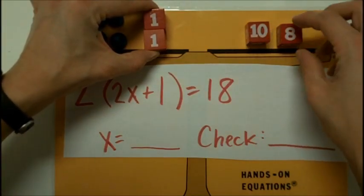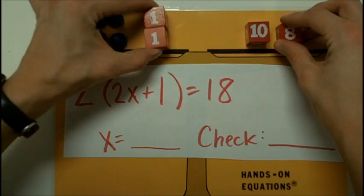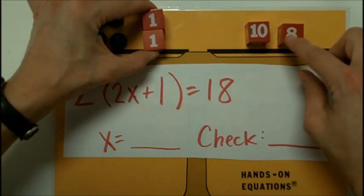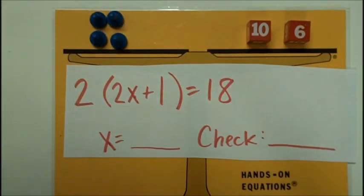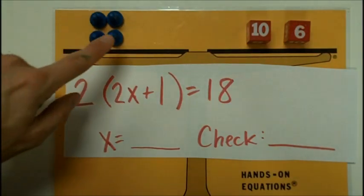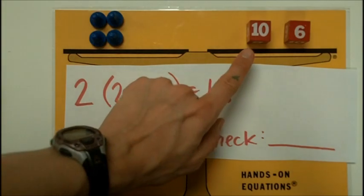So 18 minus 2 is going to make 16. So at the same time I take this away, I'm going to take away 2 here by changing it to a 6. Now I see that something 4 times makes 16.